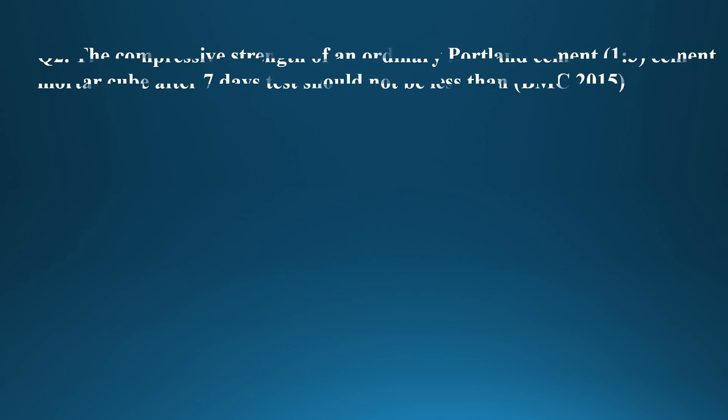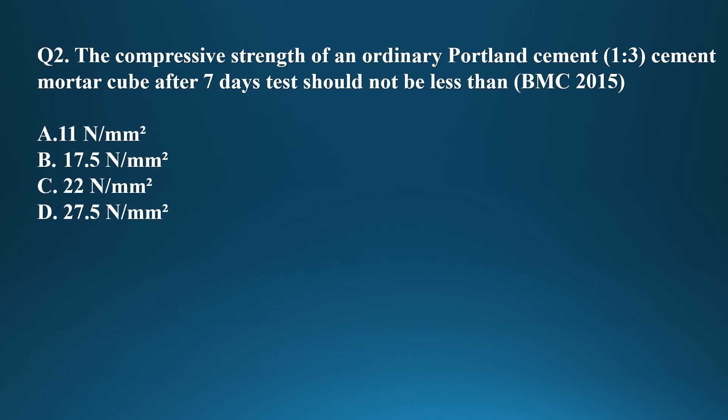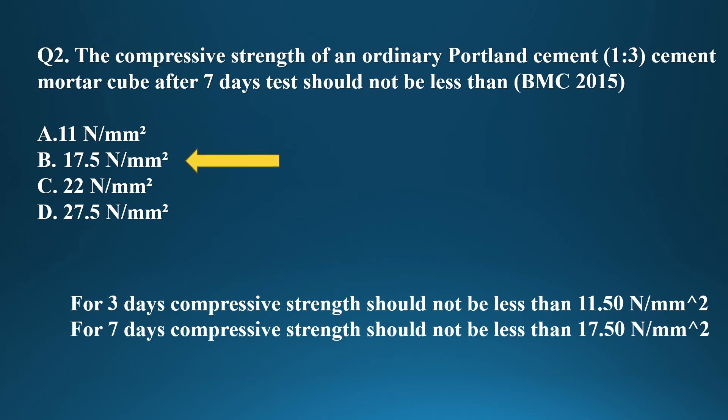Question two: the compressive strength of ordinary Portland cement with proportion 1:3 cement mortar cube after a 7-day test should not be less than 17.50 N/mm². In the case of 3 days, the compressive strength should not be less than 11.50 N/mm². So option B is correct — after 7 days: 17.50 N/mm², after 3 days: 11.50 N/mm².